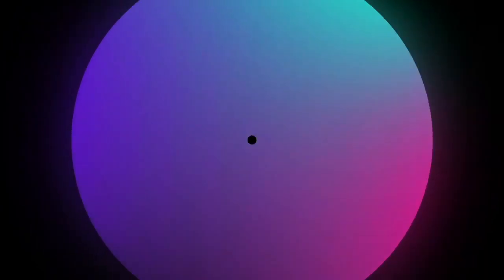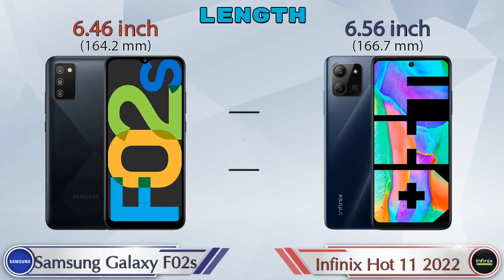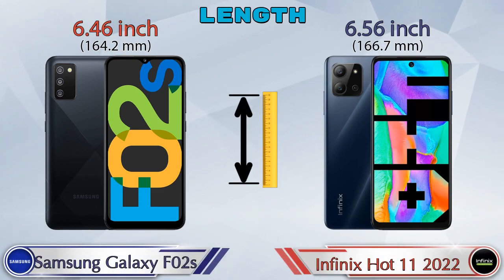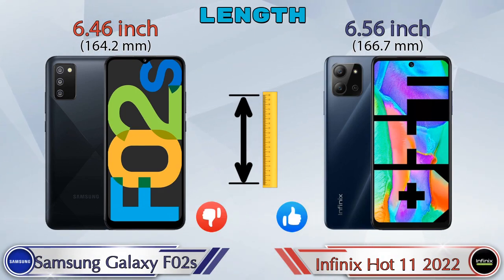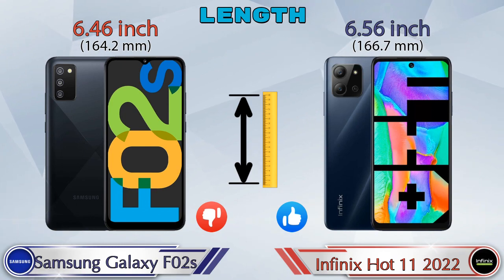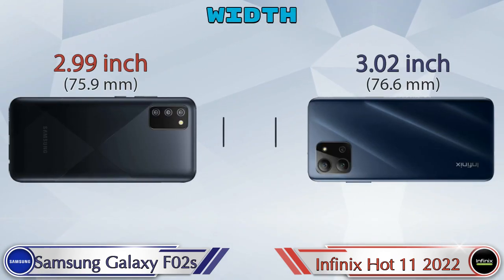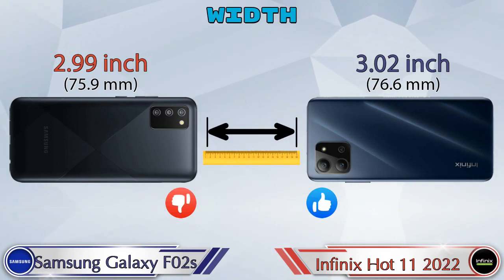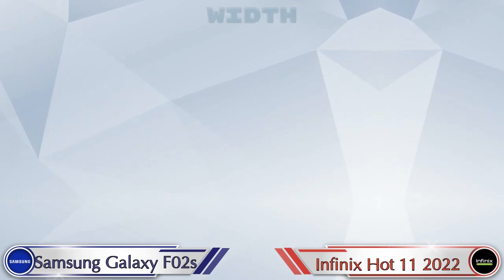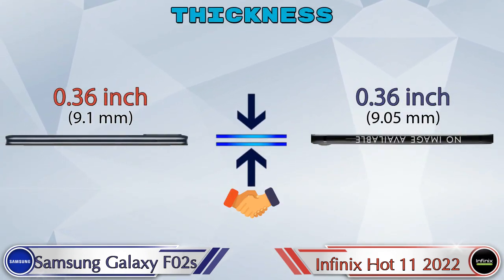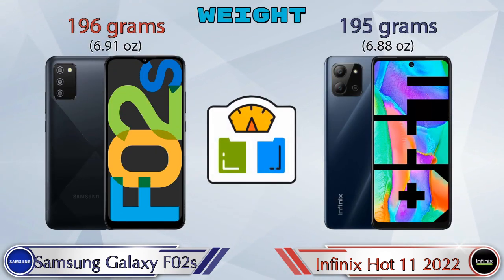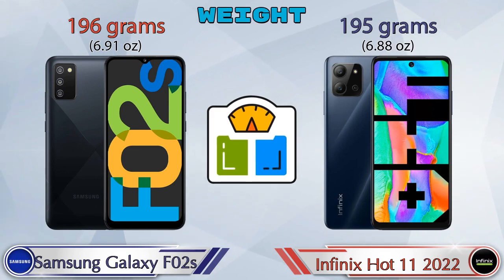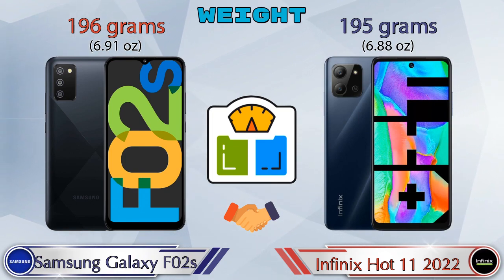Now let's check the dimensions. The length of the F02s is 6.46 inches and the Hot 11 2022 is 6.56 inches. The width of the F02s is 2.99 inches. Both phones share the same thickness of 0.36 inches. The F02s weighs 196 grams and the Hot 11 2022 weighs 195 grams — almost identical.